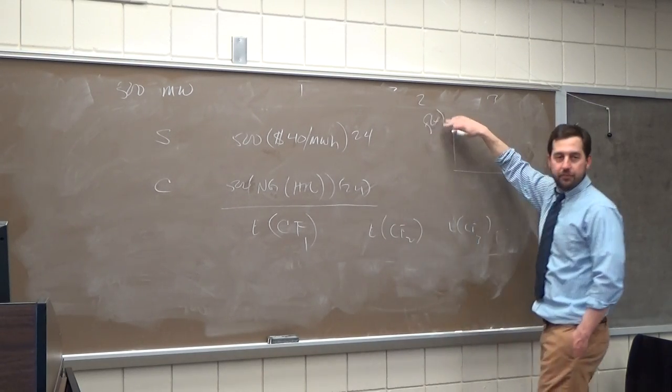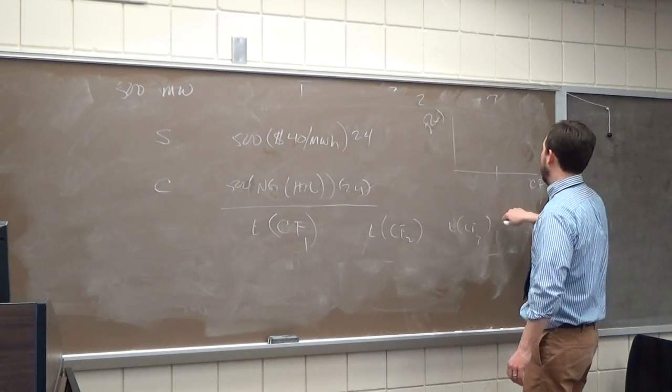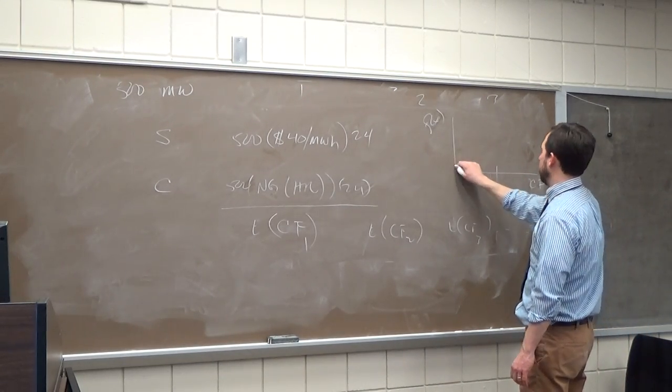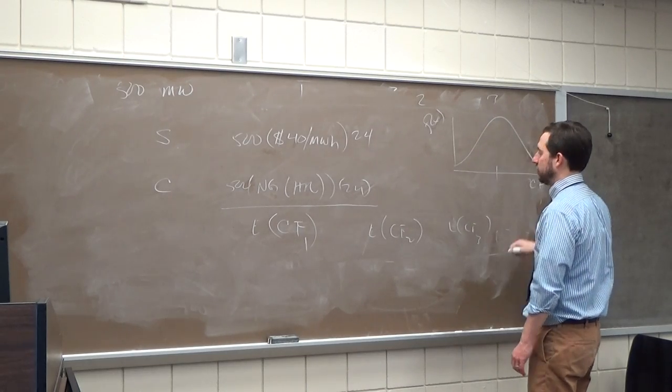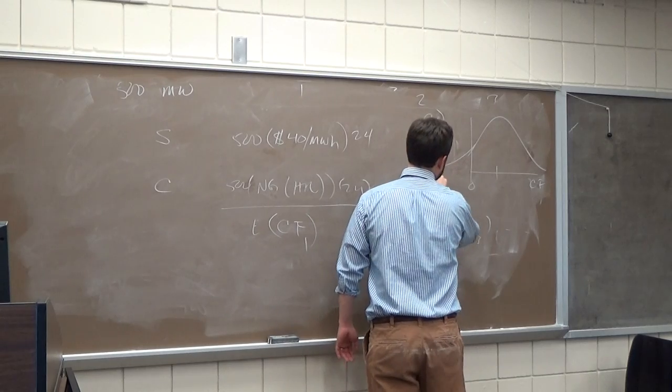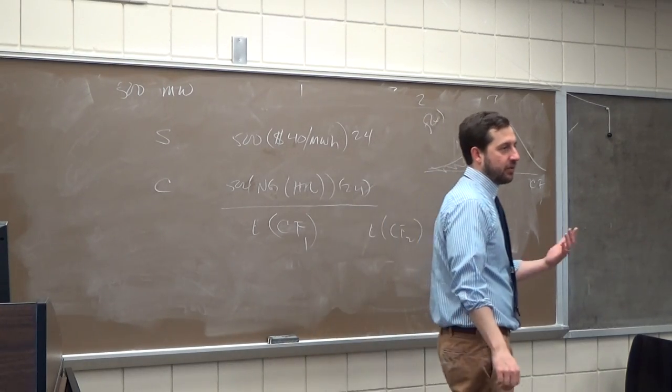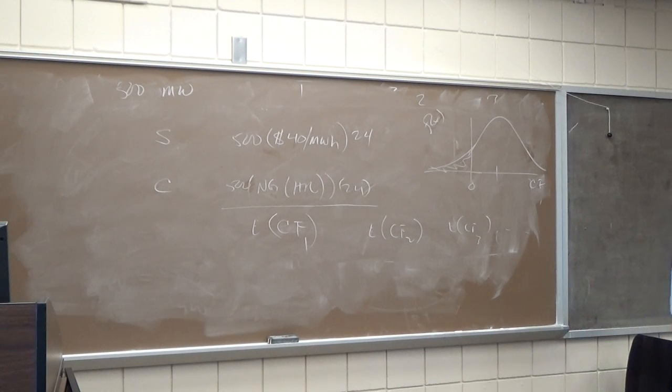So our expected cash flows have some wide distribution. And maybe this right here is zero. So in the case where it's zero, less than zero, what would we do? Would we run our plant? Or would we shut it down and wait until the next day?